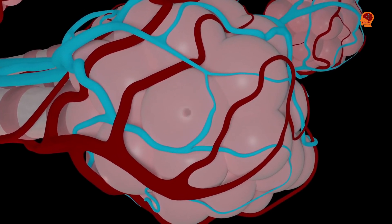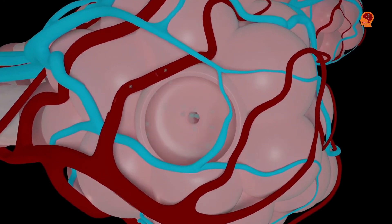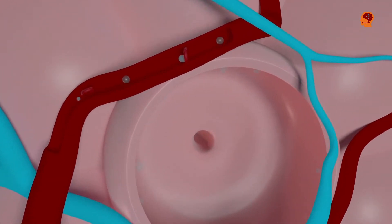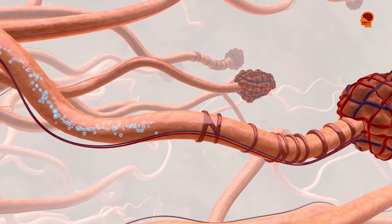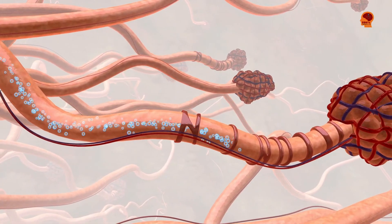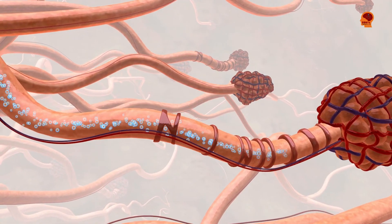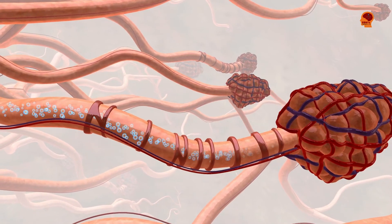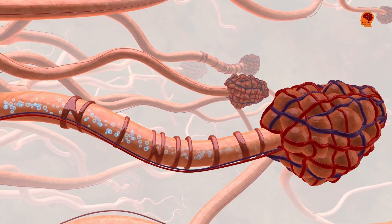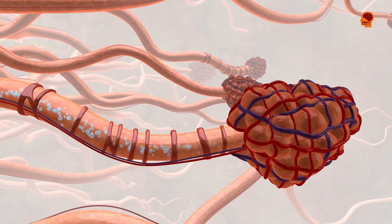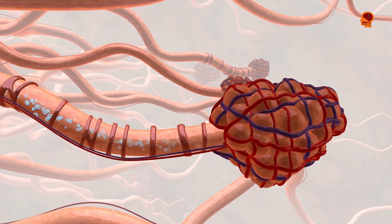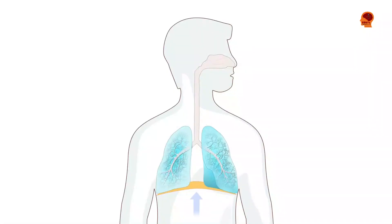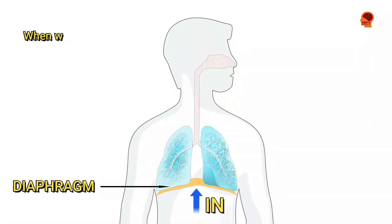Simultaneously, the alveoli work as an important exchange point for oxygen and carbon dioxide. Breathing is controlled and regulated according to the need of oxygen in the body.